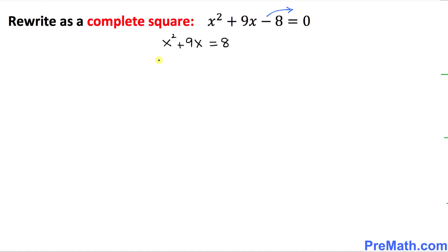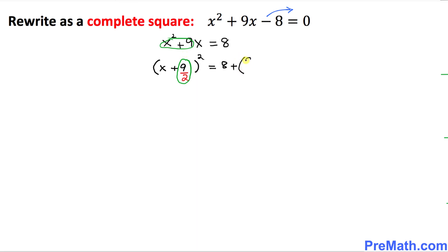In the next step, we want to complete the square. We're going to put a parenthesis with power 2 and focus on the x plus 9 part only. I'm going to write down x plus 9. The next step is I am going to divide this number 9 by 2. Then we have equals 8 plus — whatever we just wrote down, this 9 over 2 — I am going to take the square of 9 over 2. On the left-hand side this becomes x plus 9 over 2, squared, equals 8 plus 9 over 2, and squaring gives 81 over 4.